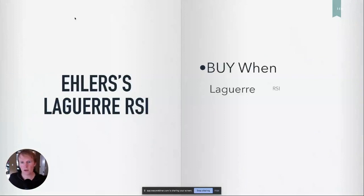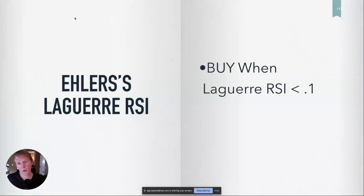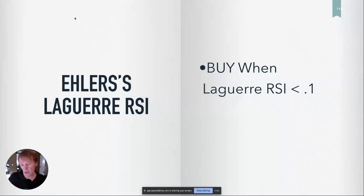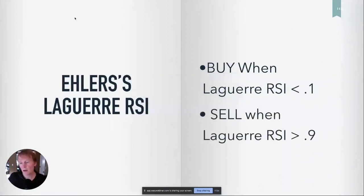The RSI signals are quite simple. Eller provided the formula — not going to get into the RSI calculation. But the bottom line is: if the Laguerre RSI is less than 0.1, we're going to buy, and when it's greater than 0.9, we're going to sell.